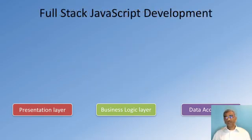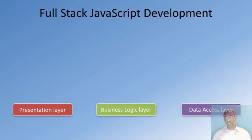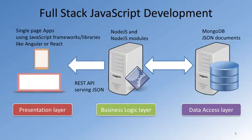There is an increasing trend towards using a single language to implement the entire stack — that language being JavaScript. The front-end can be implemented as a single-page application using frameworks like Angular or React. The server-side or business logic layer can be implemented using Node.js, which is also JavaScript-based. Data storage can be implemented using MongoDB, which stores data as JSON documents, and information exchange between server-side and client-side is done using JSON. The server-side also supports a REST API endpoint.